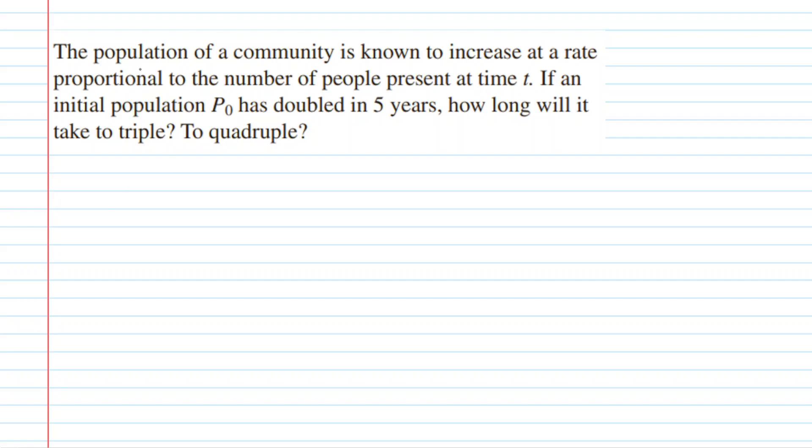Let's begin solving this question by reading the opening statement. The population of a community is known to increase at a rate that is proportional to the number of people present at time t. That is a statement that we can translate into a nice and easy differential equation. So what it's saying is that the rate of change in the population, so dP/dt, is going to equal a proportionality constant simply multiplied by the population at any given time. Please note that P will be equivalent to P(t).